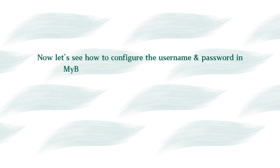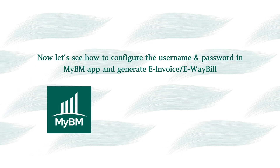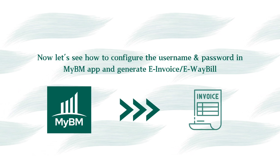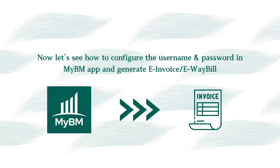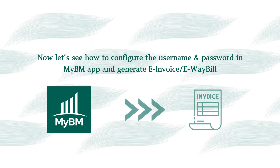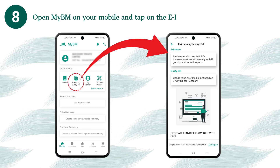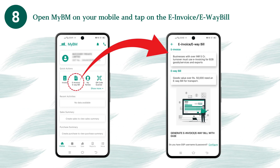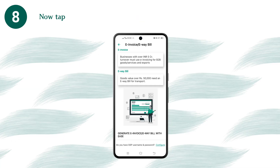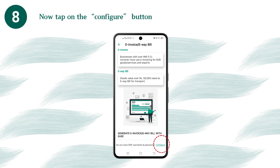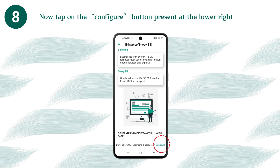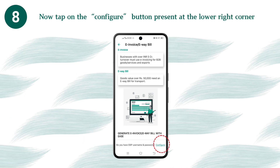Now let's see how to configure the username and password in the MyBM app and generate an e-Invoice or e-Way bill. Open MyBM on your mobile and tap on the e-Invoice or e-Way bill option. Then tap on the Configure button present at the lower right corner.